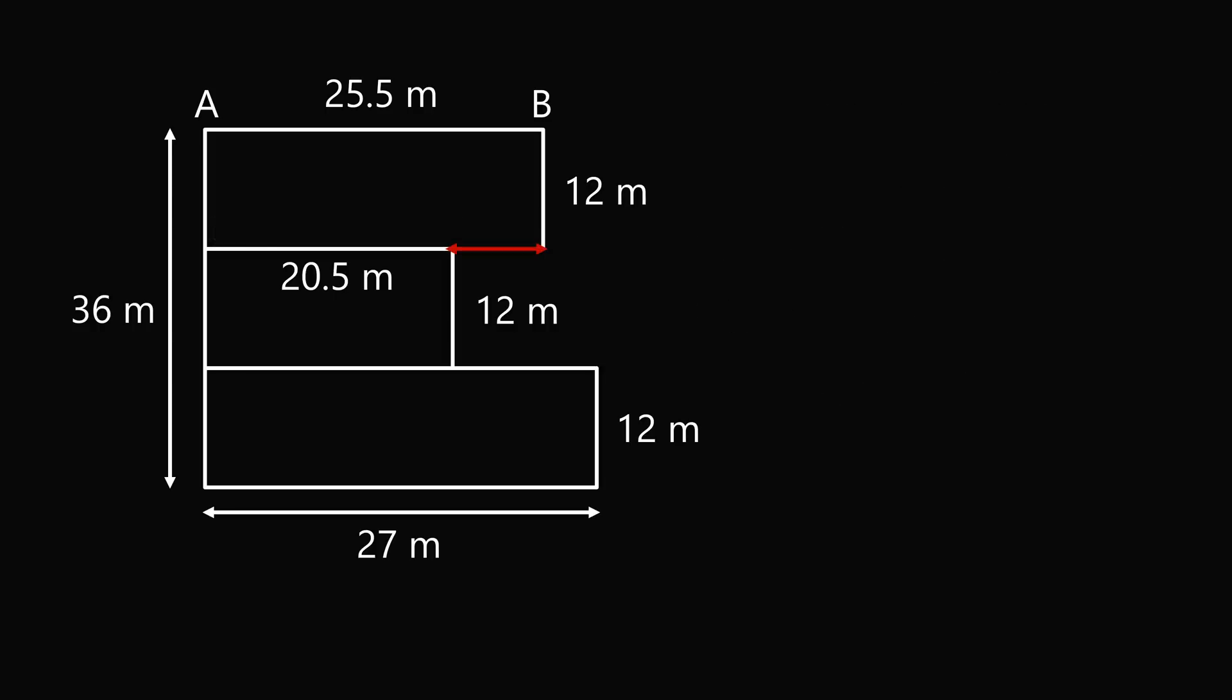So this length will be 25.5 minus 20.5 which is equal to 5 meters. Here we also have 20.5 so this length will be 27 minus 20.5, so this will be 6.5 meters.